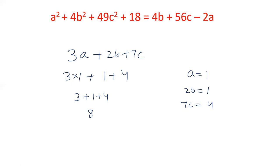If the value of a² + 4b² + 49c² + 18 = 4b + 56c - 2a, then the value of 3a + 2b + 7c is 8. I hope friends you like this video. Please like our videos and subscribe to our channel.